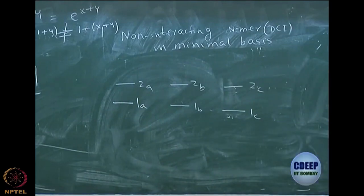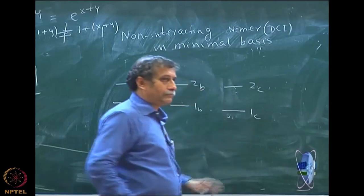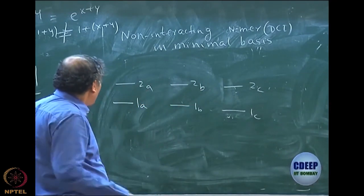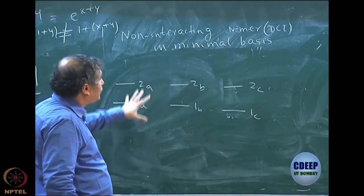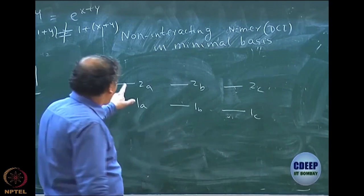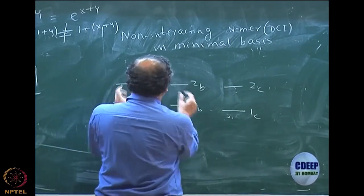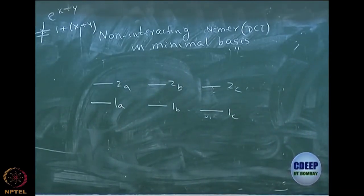If I do exact calculation, full CI — for each of them it is exact. Once again I am talking of only symmetry-adapted configurations. If I do DCI for this n-mer, you can see it is hopelessly wrong because lots of product terms — excitations between these — are all missing. There will be n such terms: not just quadruple excitations, hexadruple excitations, and all that.